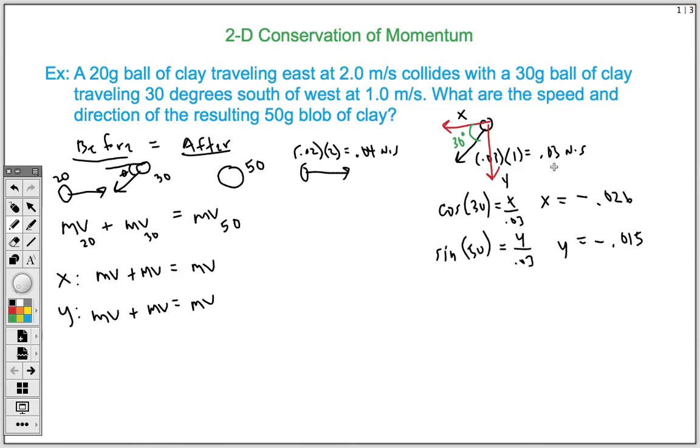Now that we have all of our values, we're going to start plugging these values into these equations. So for our x, the mass and velocity of the 20 gram, its momentum we said was 0.04. And the x component of the 30 gram we said was negative 0.026. So we're going to subtract 0.026. That's going to equal 0.014. So we know that the mass and velocity of the x component is 0.014.